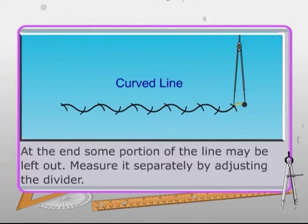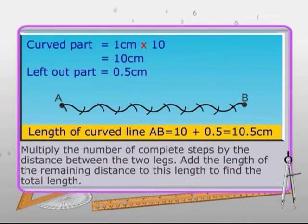At the end, some portion of the line may be left out. Measure it separately by adjusting the divider. Multiply the number of complete steps by the distance between the two legs, that is curved part, which is equal to 1 cm. Multiply it by 10 is equal to 10 cm. Now, add the length of the remaining distance to this length to find the total length. So, the left out part is equal to 0.5 cm. Therefore, the length of curved line AB is equal to 10 plus 0.5, which is equal to 10.5 cm.